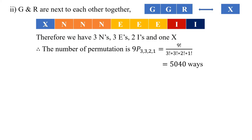The number of permutations with 9 letters is 9P(3, 3, 2, 1), representing three N's, three E's, two I's, and one X. This equals 9! / (3! × 3! × 2! × 1!), which equals 5,040 ways.